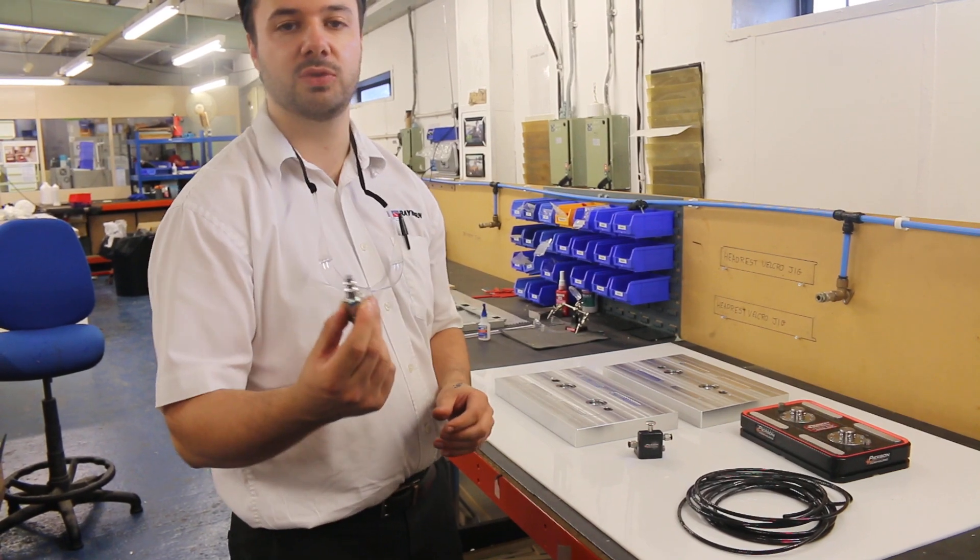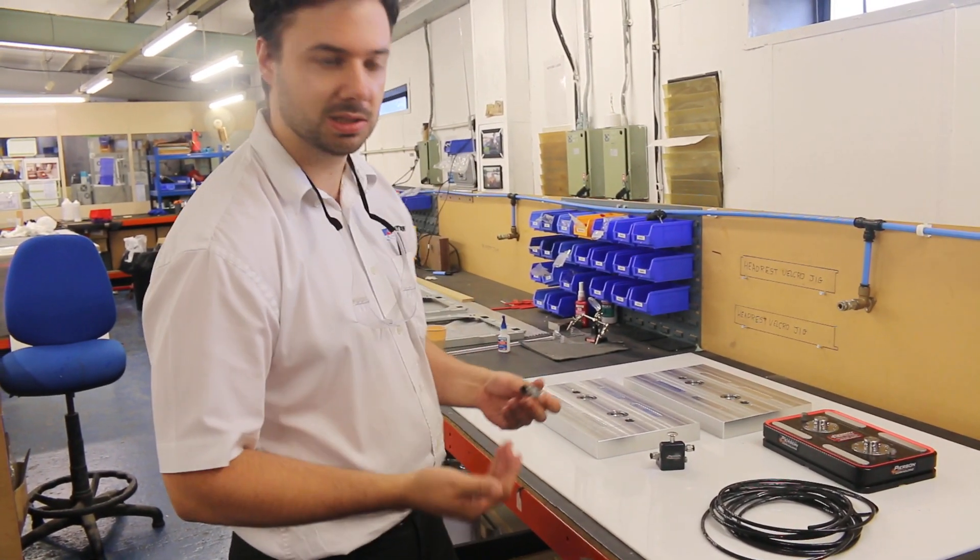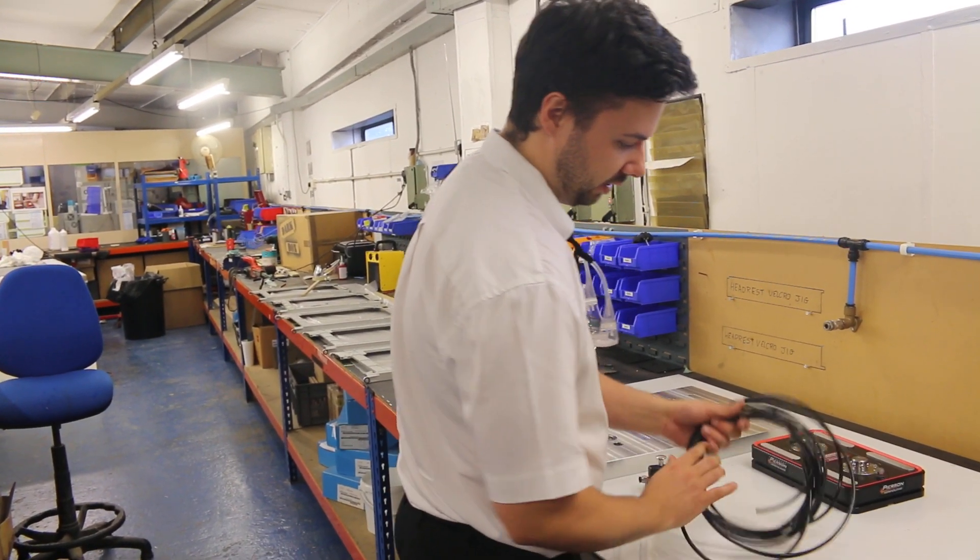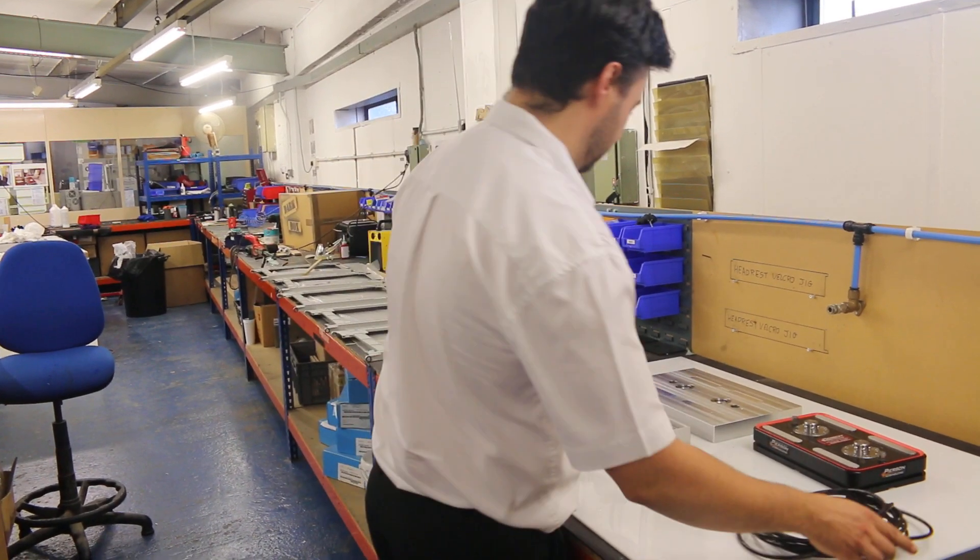It comes with adapters. If you're based in the States, you'll have different adapters than Raven Plastics here in the UK. It also comes with tubing for the air compressor and two pallets.